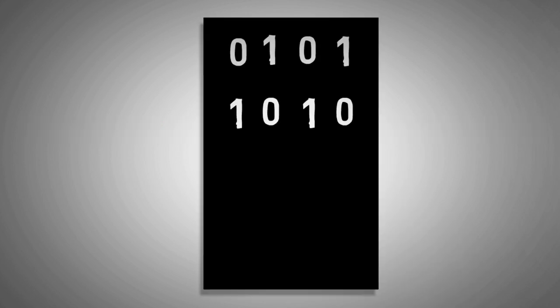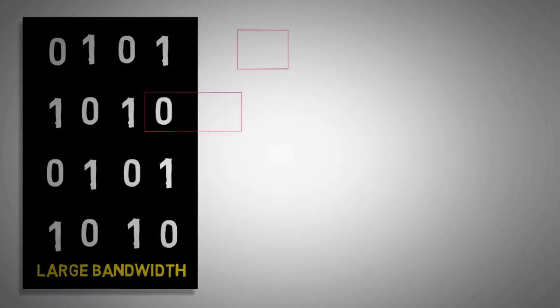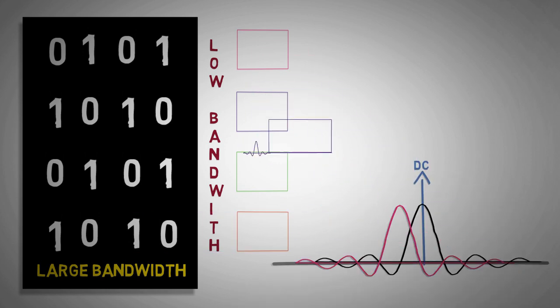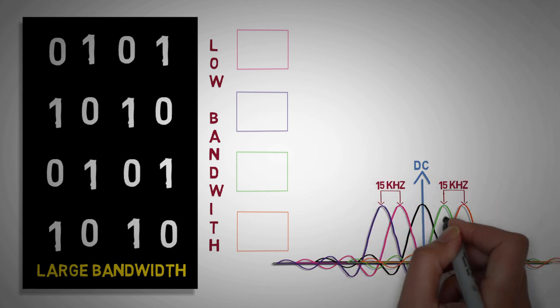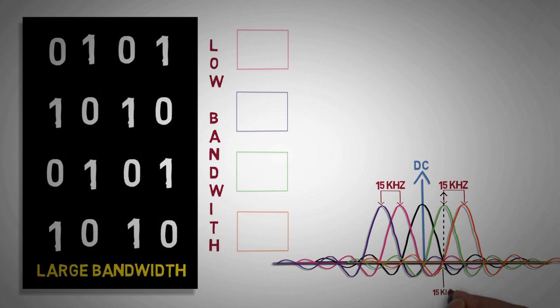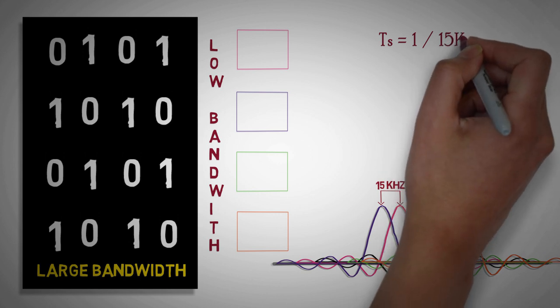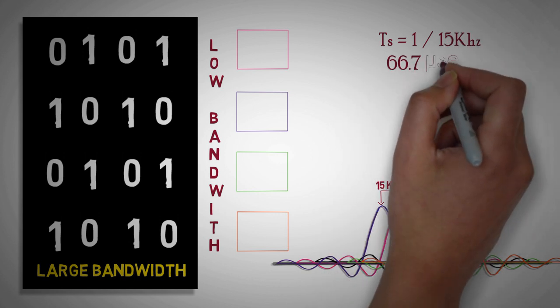In OFDM, high-speed data streams of large bandwidth are split into parallel slower sub-streams of lower bandwidth called sub-carriers. These sub-carriers are centered around frequencies in multiples of 15 kHz on both sides of DC. As the lowest sub-carrier is of 15 kHz, symbol duration TS is equal to 1 by 15 kHz or 66.7 microseconds.